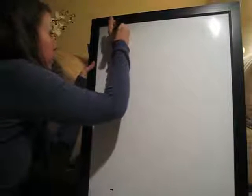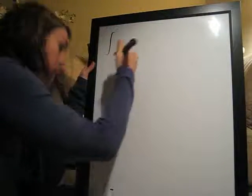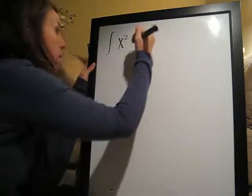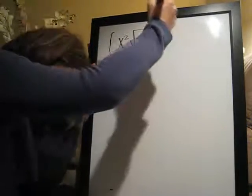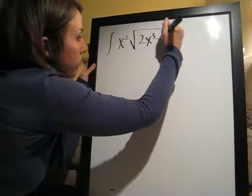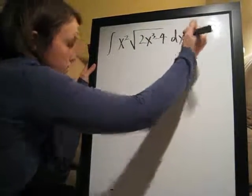Hey, guys! Here's another u-substitution problem. This one is x squared times the square root of 2x to the 3 minus 4 dx.